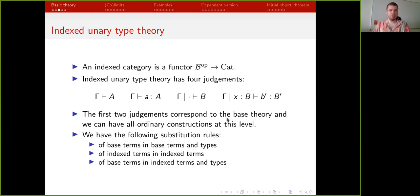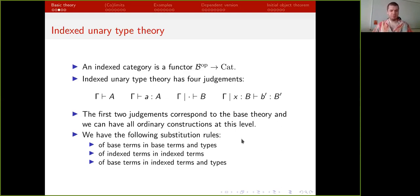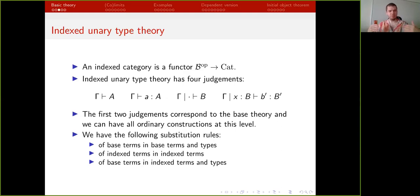We also have substitution. We can substitute base terms into base types and terms, and index terms into index terms. Importantly, we can substitute base terms into both levels. This operation makes the map functorial: if we have a term in the base theory representing a morphism, then this term will act on objects and on morphisms, giving us functoriality.